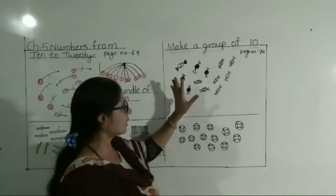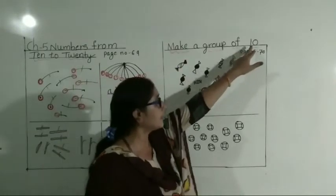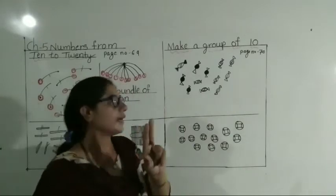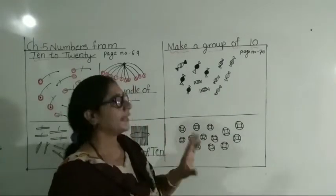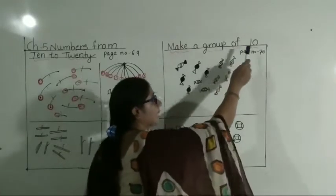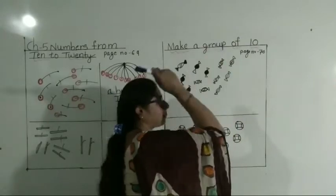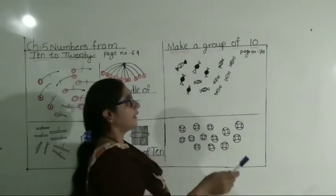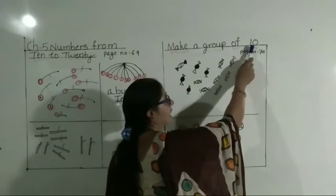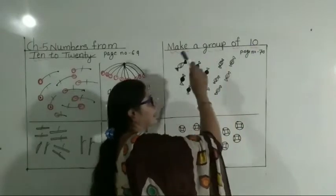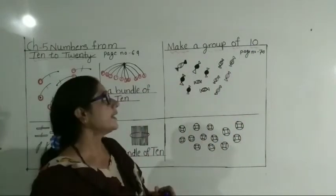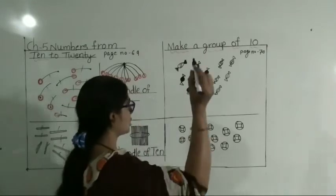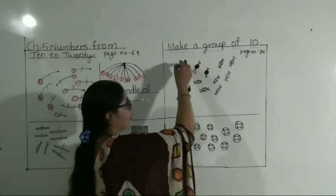See, dear student. First you count ten — ten kya karna hai? Count karna hai. Ten count karke, ek group banana hai. Understood? What you have to do? First you count ten, then make a group.